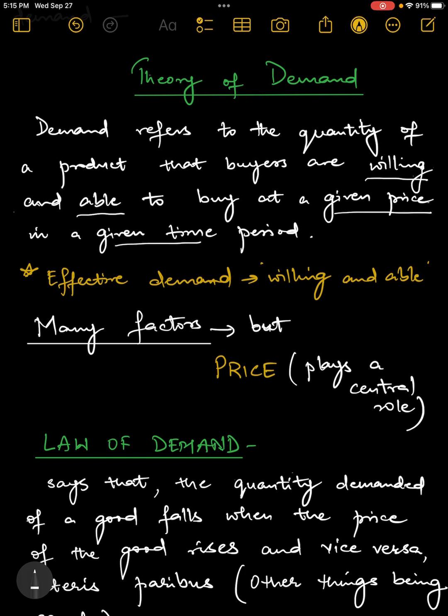When we understand this concept more, we will realize that there are many things that determine the quantity demanded of a good. But one determinant plays a very central role, which is called price.